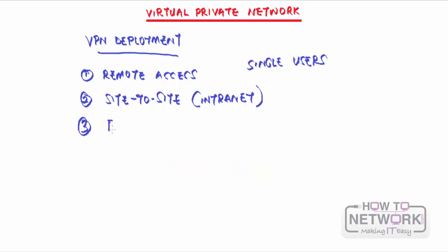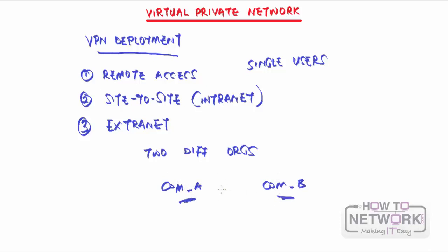The third deployment type is extranet. While intranet allows offices of the same organization to connect to each other securely, extranet allows two different organizations to connect. For example, if you have Company A and Company B — they are not the same organization, but they have a partnership agreement. Like when booking flights on British Airways: British Airways is not the one running the hotel options or car services, but they are connected securely. This is an example of an extranet — they are connected because they have some form of partnership.